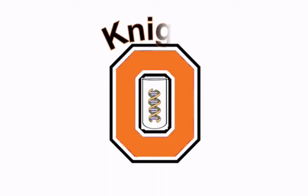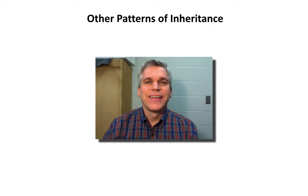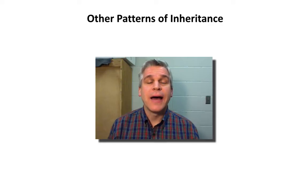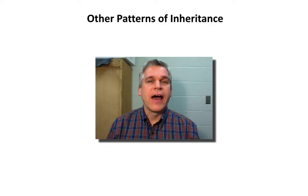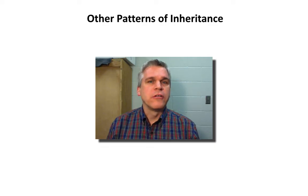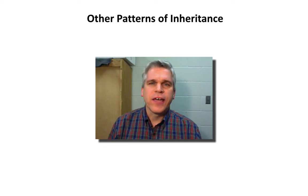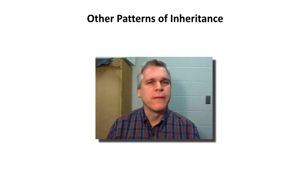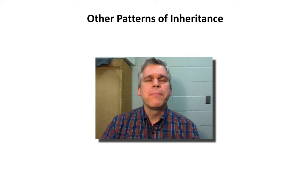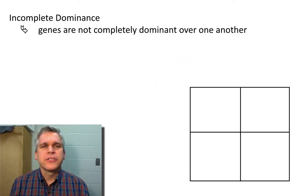Hello everyone, I'm Mr. Furlong, and today we're going to take a look at other patterns of inheritance. In class, we've been focusing on dominant and recessive genes and how they are expressed, and the fact that organisms have just one set of these genes for that trait — but that's really not the case. Most of the time there's something else going on, and that's what we're going to take a look at today: some examples of other patterns of inheritance. So let's get started.